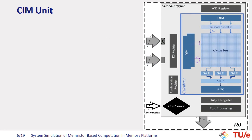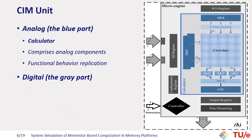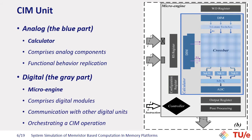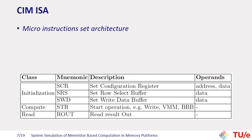Here I briefly describe our new SIM unit. It comprises two distinct domains: an analog domain, which we call the calculator, and a digital domain called the micro-engine. The calculator comprises analog components like the crossbar, analog-to-digital converter, and digital-to-analog converter, and it replicates the functional behavior of each module. The micro-engine consists of several registers and a controller that orchestrates the operation inside the SIM unit and interfaces the analog calculator to the other units of the TTA architecture. Using the developed instruction set, the SIM unit is programmed. The instruction set consists of three classes that follow each other until an operation of the SIM is finished.